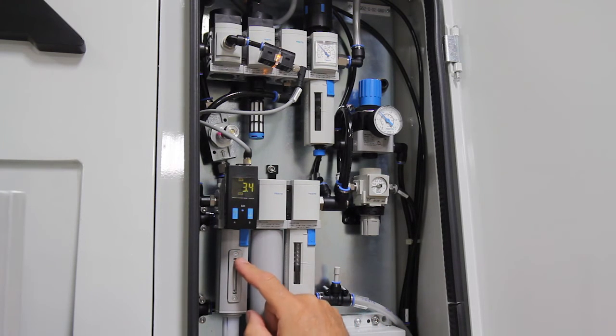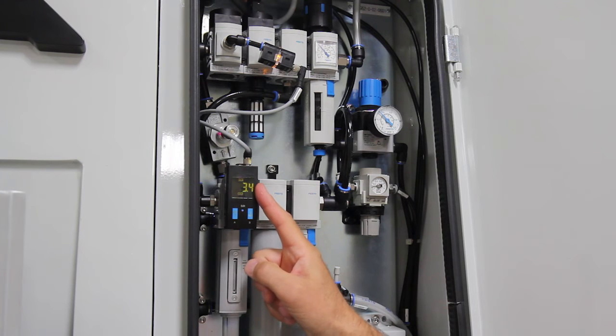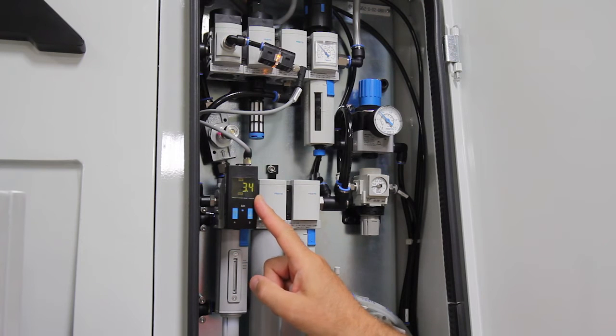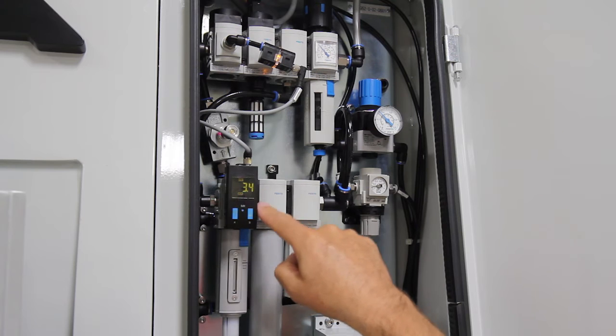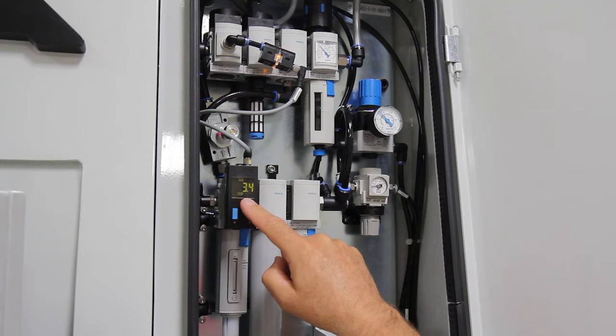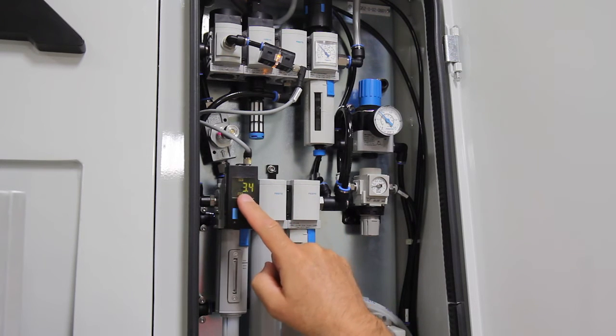Attached to this filter unit is a differential pressure switch. It's set to display a message on the operator screen when the filter element is blocked. This message will appear when the reading on the differential pressure gauge display exceeds 35 kPa.